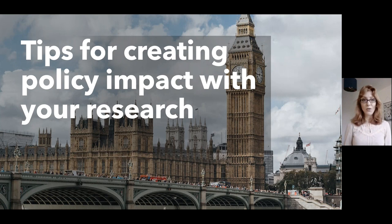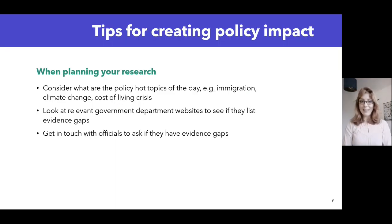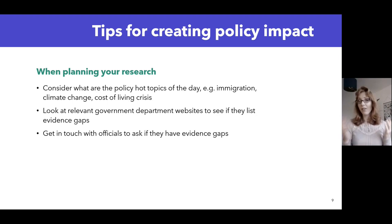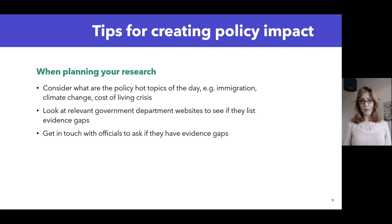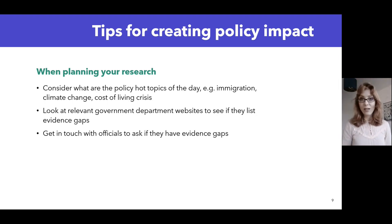Now I'm going to go through a few tips for how to create policy impact with your research. When planning your research, consider what the policy hot topics of the day actually are. Currently in the UK, those could be things like immigration, climate change, or the cost of living crisis. Also think ahead — what could the policy hot topics be in a couple of years' time? If you're doing a PhD or postdoc that will take a number of years, your findings might be outdated by the time they're published, or the policy window — the area of opportunity — could have passed.